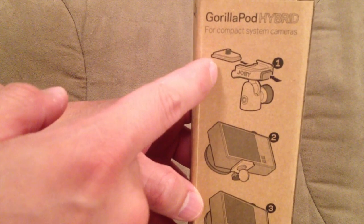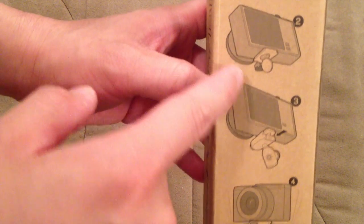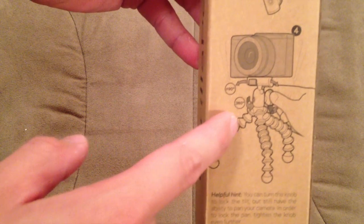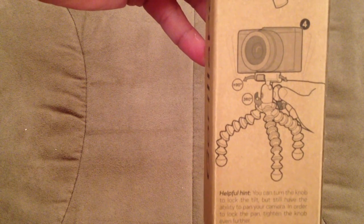This hybrid system comes with a quick release for any of the camera universal mounts. It can also rotate 360 degrees and tilt 90 degrees.